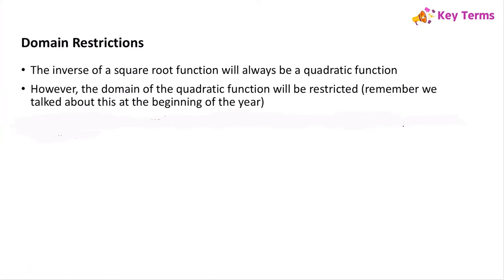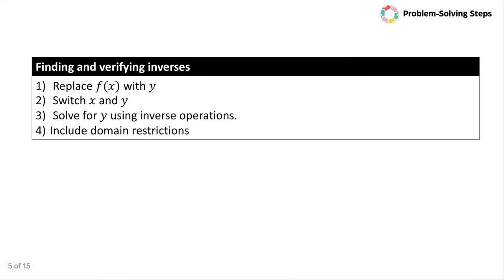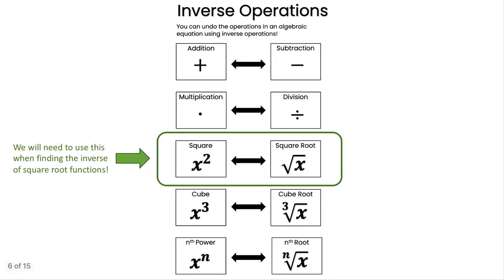We also need to consider domain restrictions, because the inverse of a square root function will always be a quadratic function. We have to restrict the domain of that quadratic function. To find and verify inverses, we replace f(x) with y, switch x and y, solve for y using inverse operations, and consider any domain restrictions. A very important idea to keep in mind: the opposite of squaring is always finding the square root.